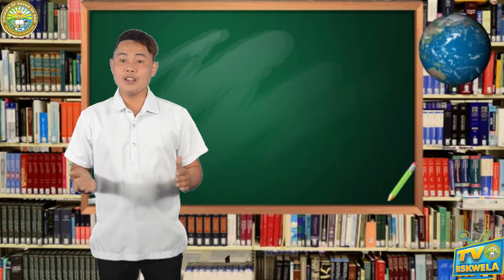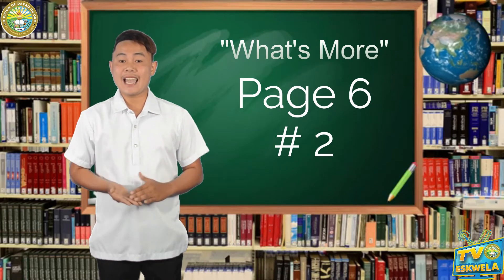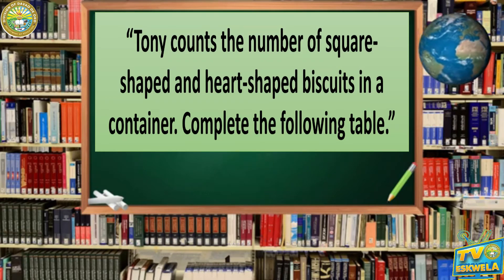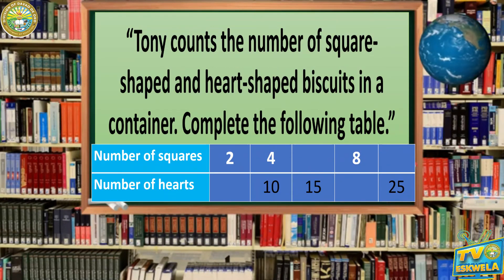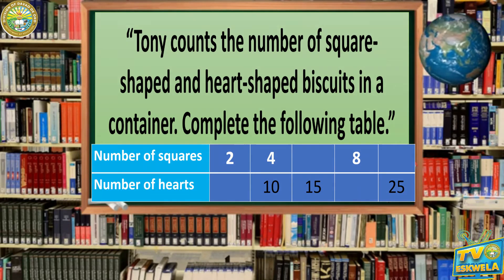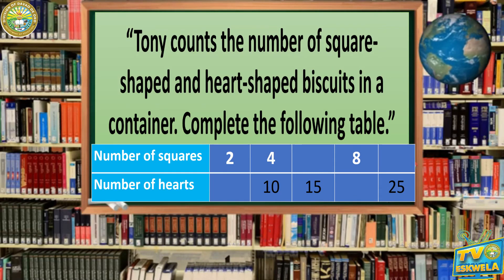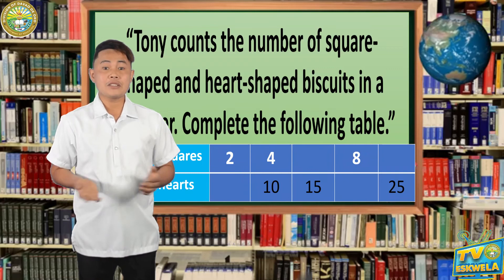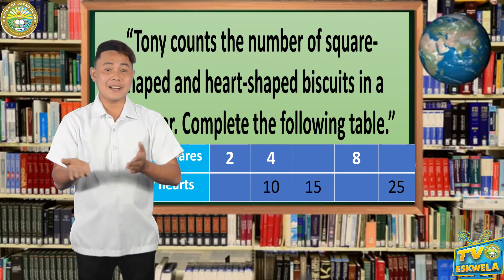This time, try to solve What's More on page 6, number 2. Tony counts the number of square-shaped and heart-shaped biscuits in a container. Complete the following table. The number of squares are 2, 4, and 8, and the number of hearts are 10, 15, and 25. I will give you enough time to solve the problem. Your timer starts now.